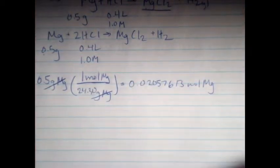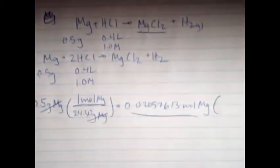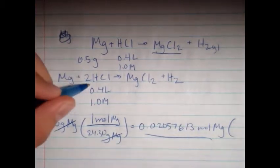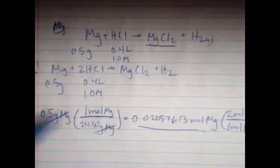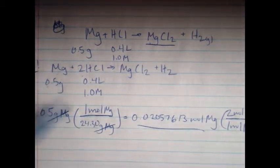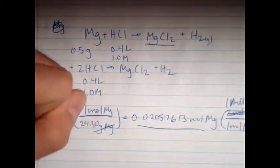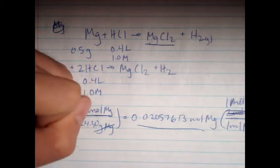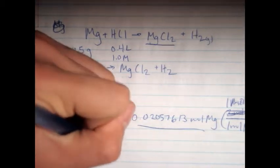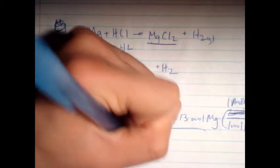So now that you have your moles of Mg right here, you take the mole ratio from your balanced equation, and the mole ratio is 2 HCl to 1 Mg, and you're getting rid of Mg, so it's 1 mol Mg, 2 mol HCl, and that gets you, oh, I'm sorry, wrong, wrong. It's 1 mol of magnesium to 1 mol of MgCl2, and 0.5 grams of magnesium will get you 0.02057613 mole magnesium chloride.